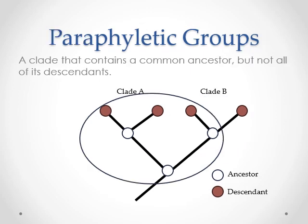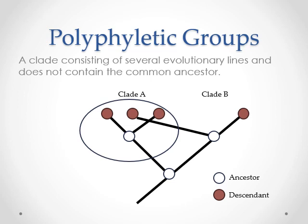A paraphyletic group is a common ancestor and almost all, but not all, of the descendants - some are left out. Think of it like those cousins or that terrible uncle you don't want to spend Thanksgiving with - you'd exclude them from the phylogeny. They're out of the family. That would be a paraphylogeny - everybody except that one.